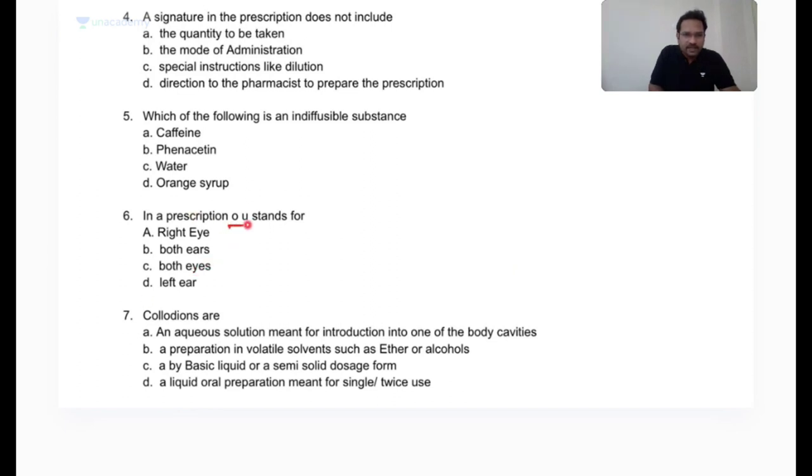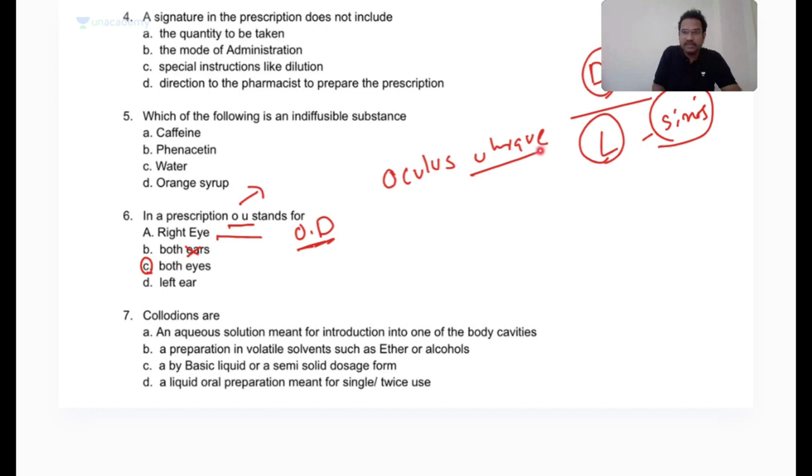In a prescription, OU stands for - the Latin words oculus uterque meaning both eyes, not ears. Right eye is oculus dexter (dexter means right side), left eye is oculus sinister (levo or sinister means left side). So OU, oculus uterque, means both eyes.